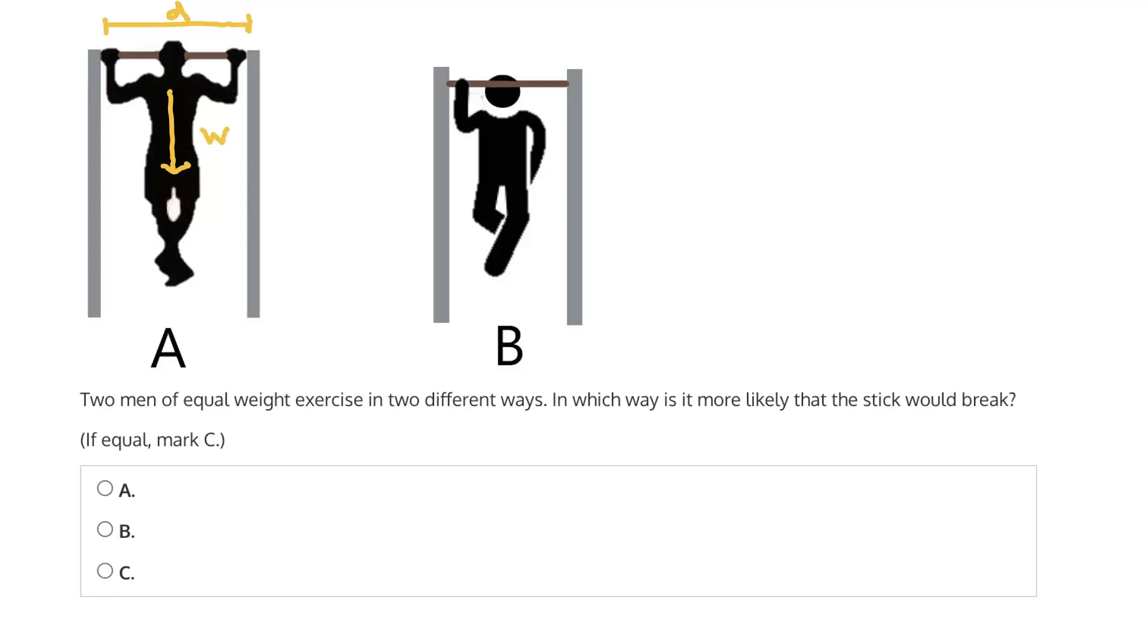Now, in B, of course, we have something different because he's not using two hands. He's using one hand close to only the left support, which means his weight will be very asymmetric. It will be off to the left, close to the left support beam. And we can label this the weight of B, and go back and label this the weight of A.